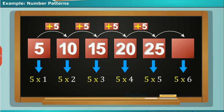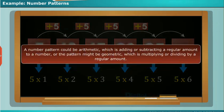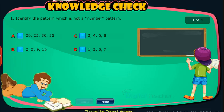So these series of numbers make a pattern and can be extended based on their rule, like addition, subtraction, multiplication, and division. A number pattern could be arithmetic, which is adding or subtracting a regular amount, or the pattern might be geometric, which is multiplying or dividing by a regular amount. Attempt the following questions to check your understanding.